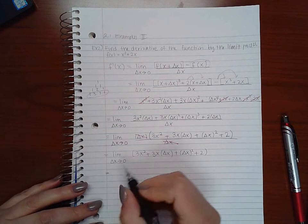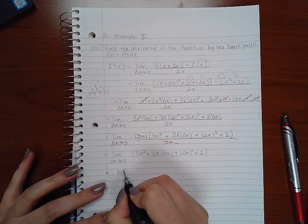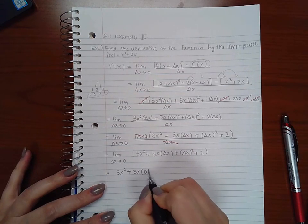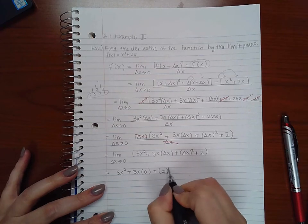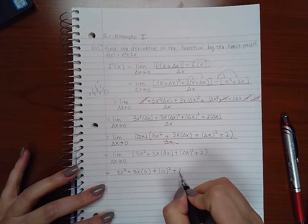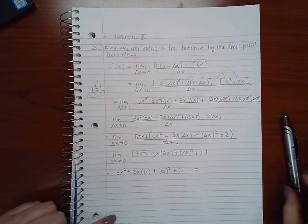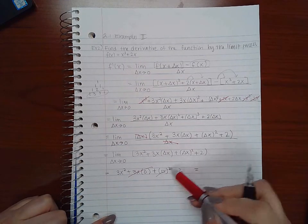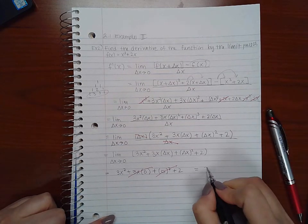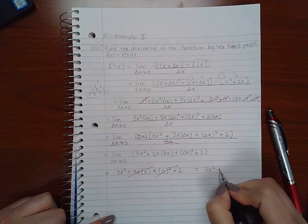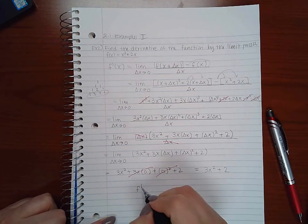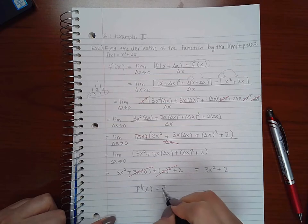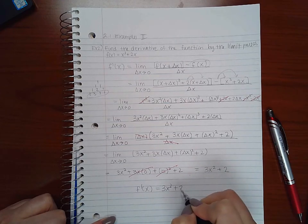So then now when I substitute, I have three x squared plus three x times zero plus zero squared plus two. And if I simplify that, this term will go to zero, this term will go to zero, so I end up with three x squared plus two. And so f prime of x equals three x squared plus two.